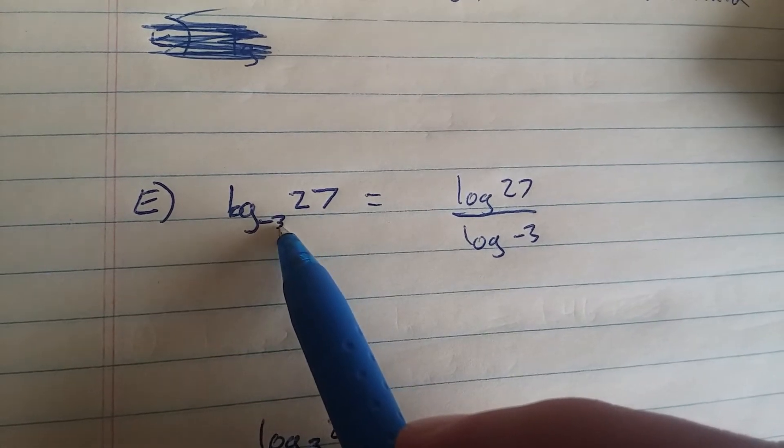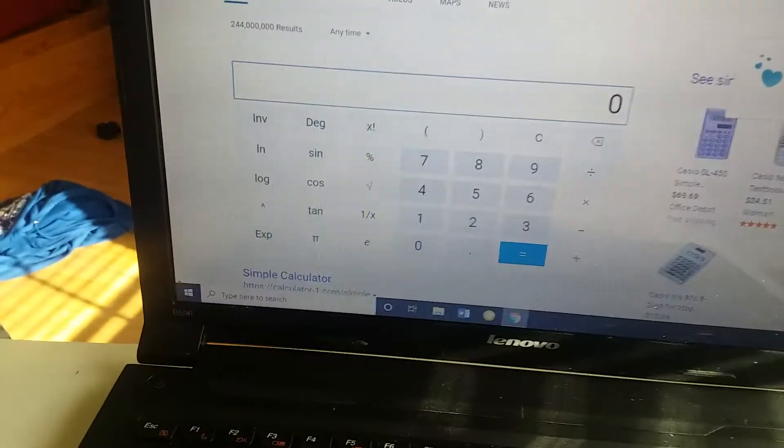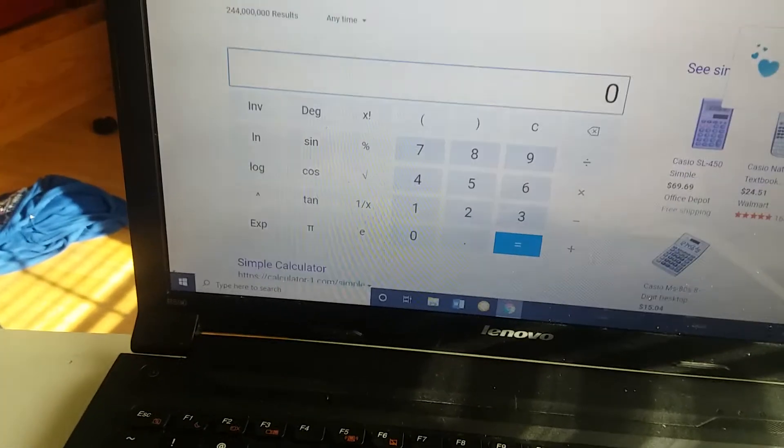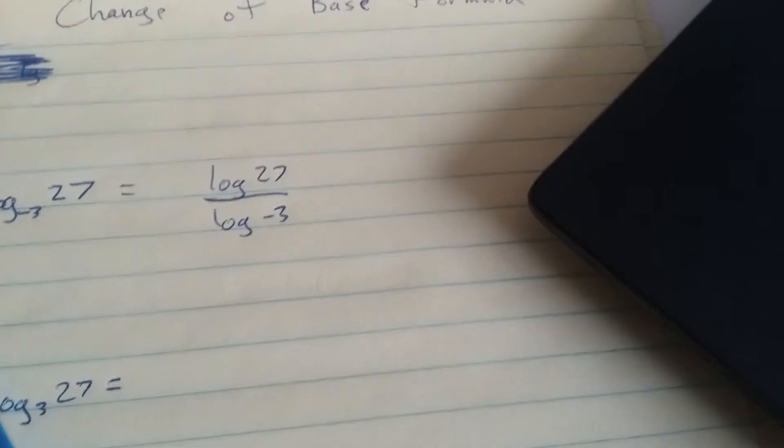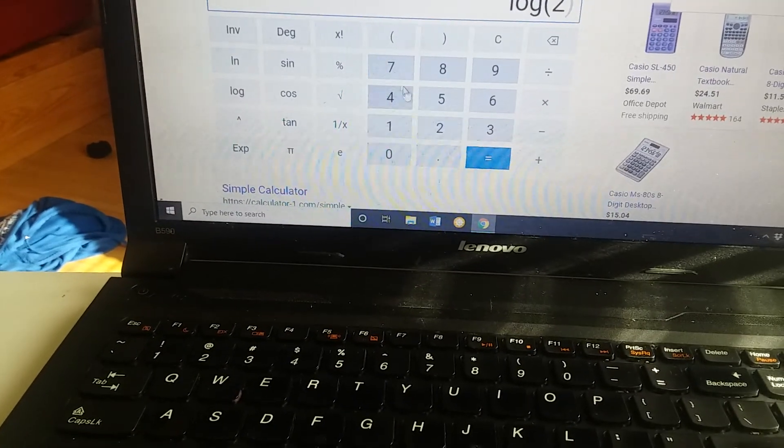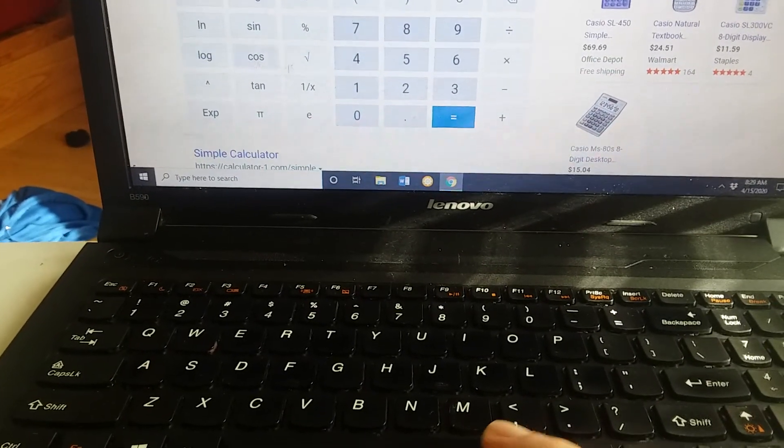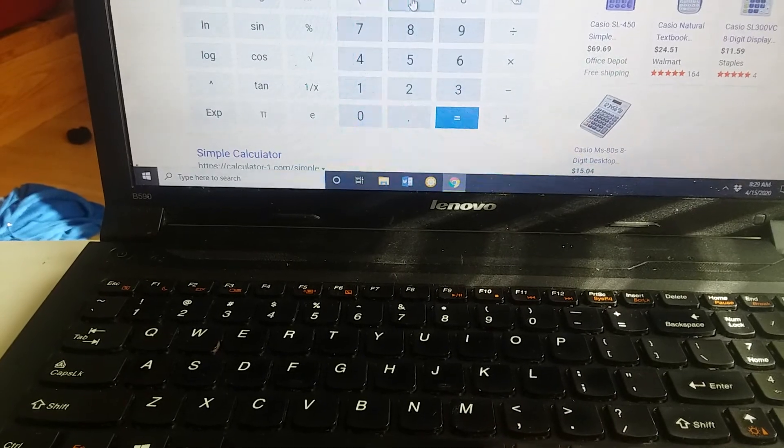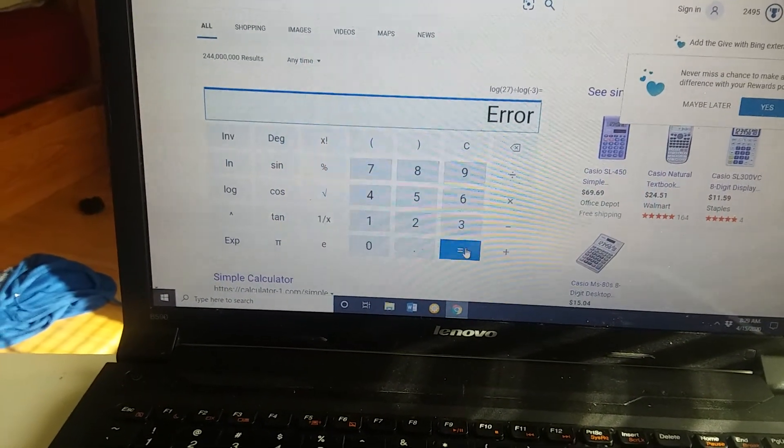If you were to put it in your simple calculator, you would have log of 27 using the change of base formula. We're going to have log of 27 divided by log of negative 3, and you're going to get error. No solution.